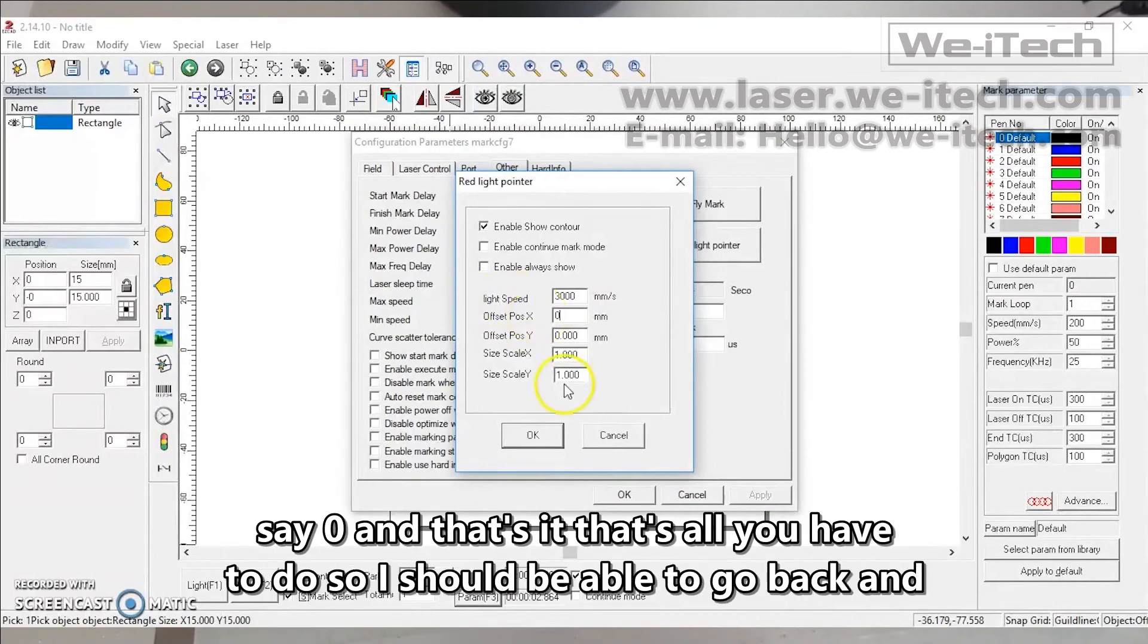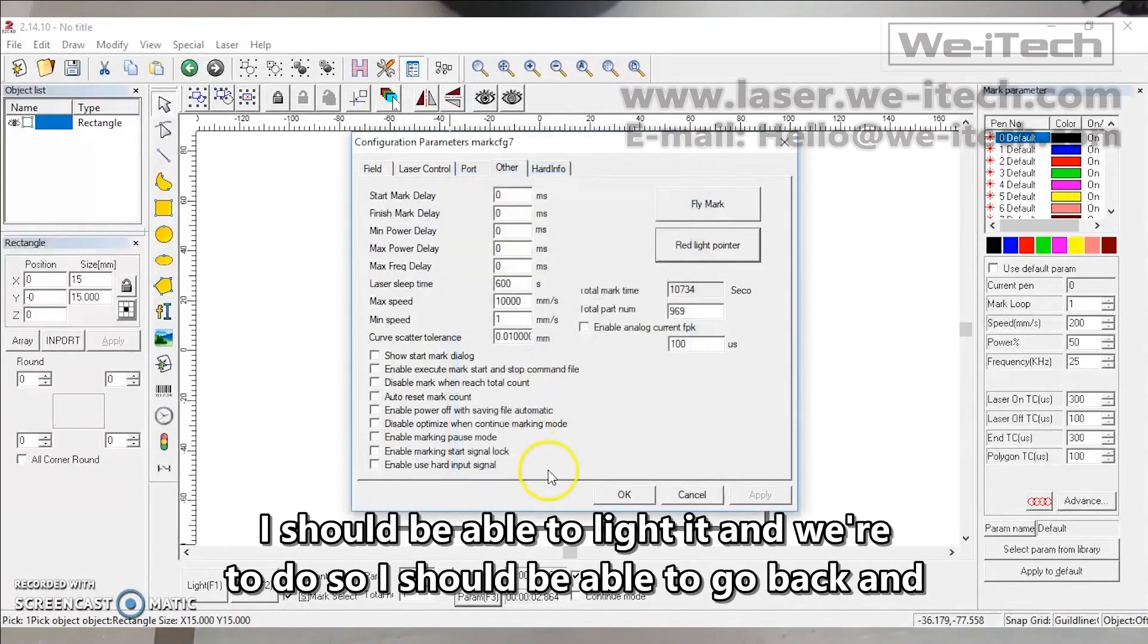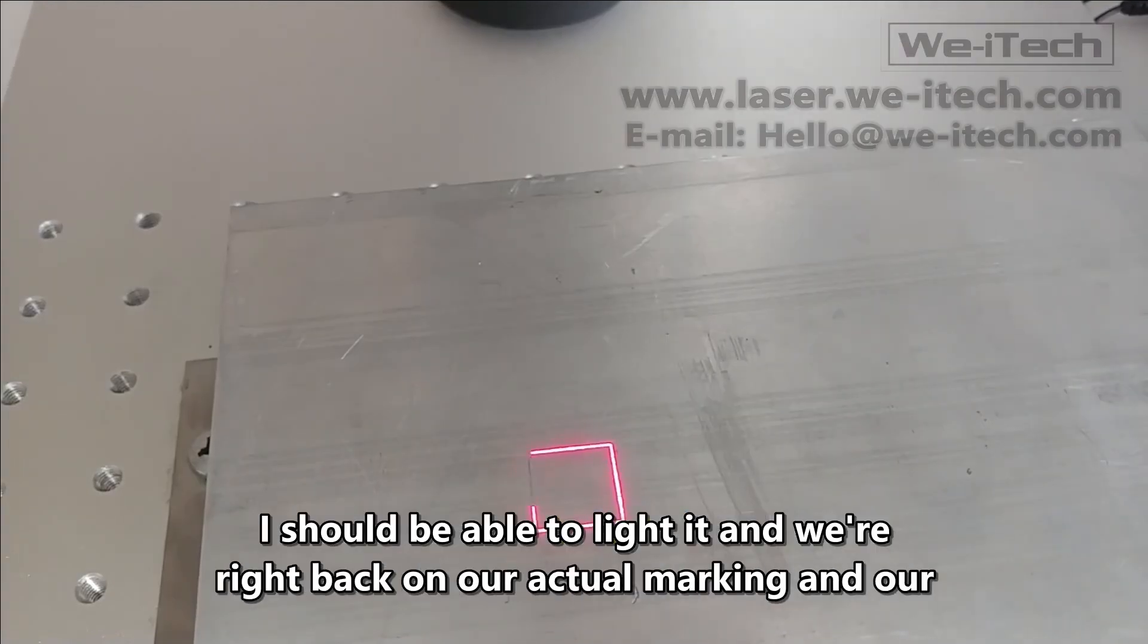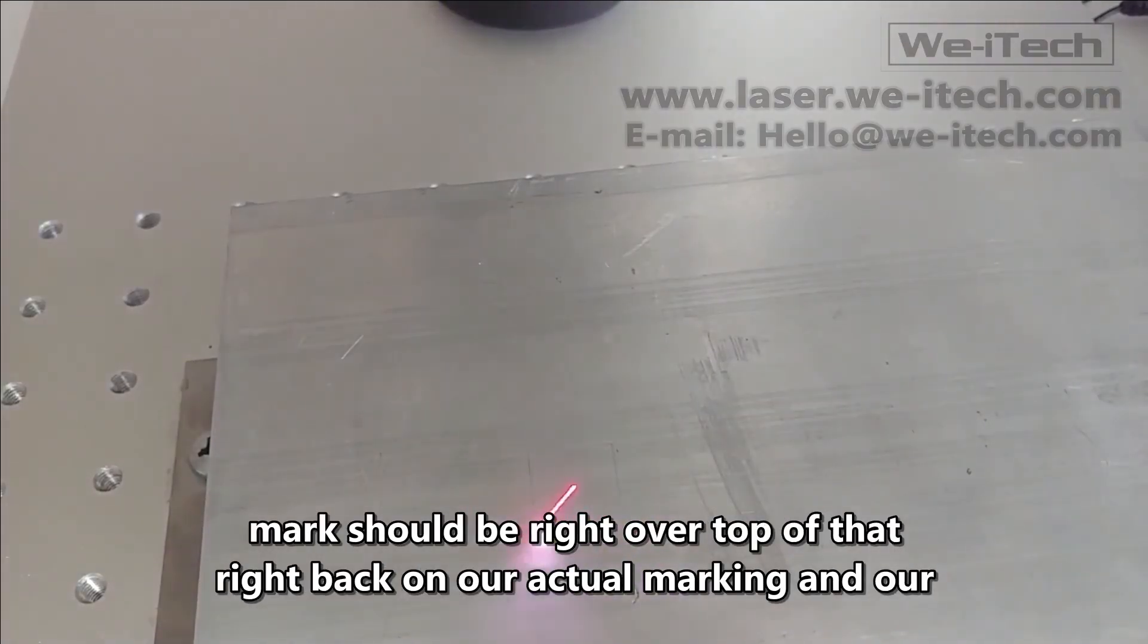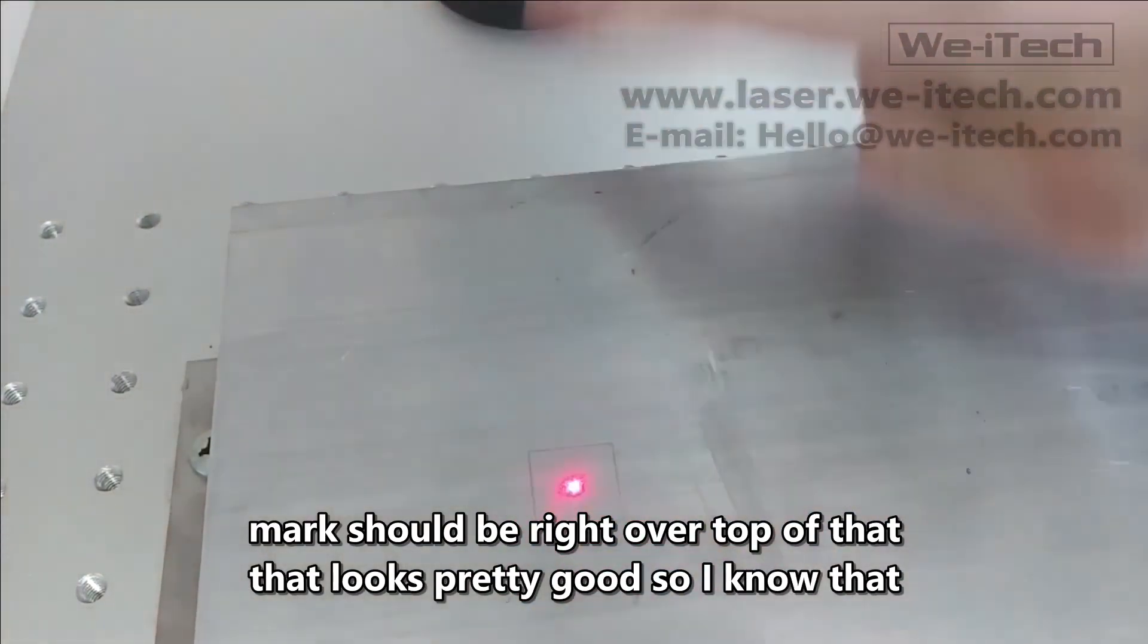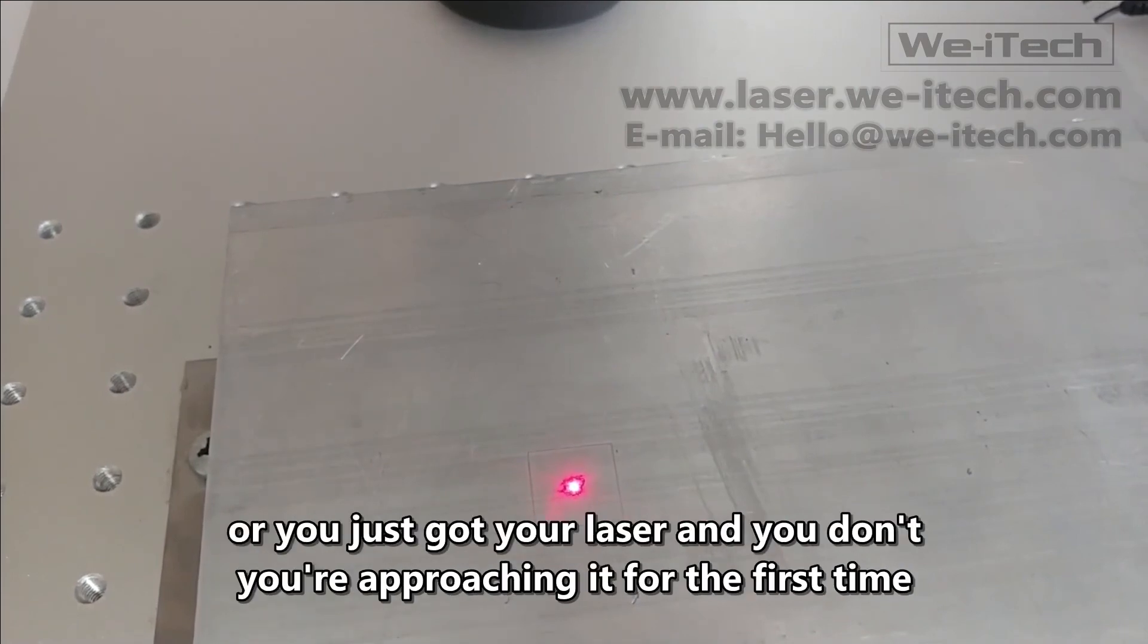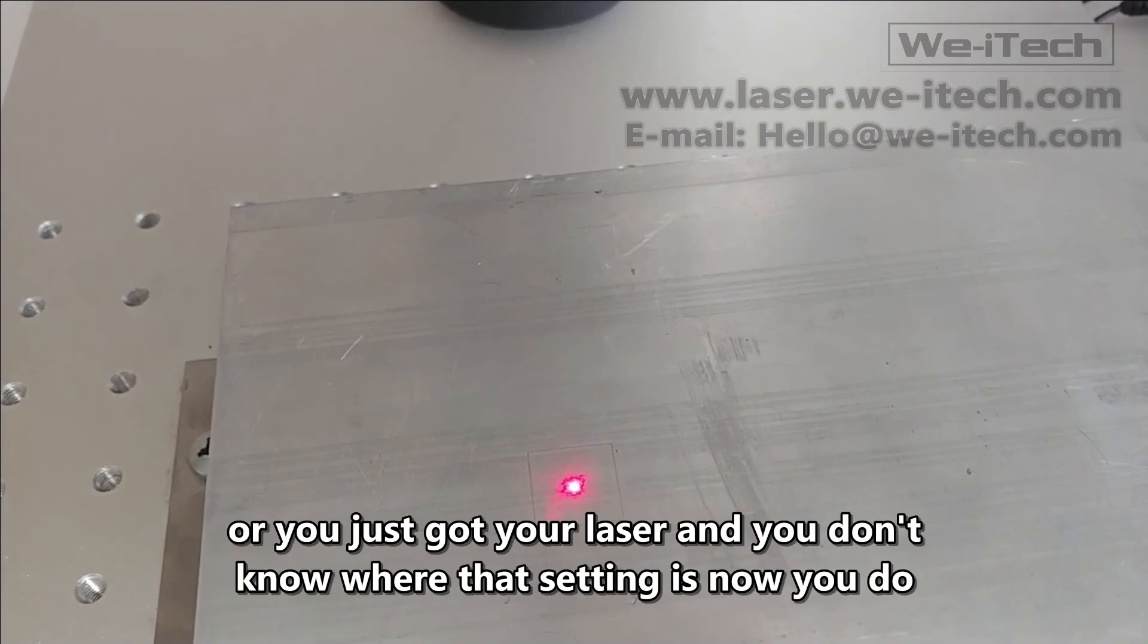That's all you have to do. So I should be able to go back, and I should be able to light it, and we're right back on our actual marking. And our mark should be right over top of that. That looks pretty good. So I know that wasn't super difficult to find, but if you're approaching it for the first time or you've just got your laser and you don't know where that setting is, now you do.